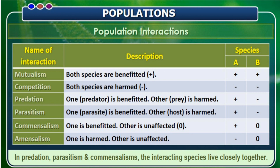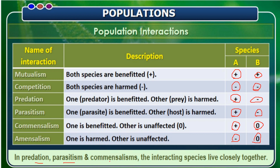Looking at the interactions in detail: in mutualism, both species A and species B are benefited. In competition, both species are adversely affected. In predation, the predator is benefited and the prey is adversely affected. In parasitism, one organism is benefited and the other is adversely affected. In commensalism, one is benefited and the other is neither benefited nor affected. In amensalism, one is harmed and the other is neither benefited nor harmed. In predation, parasitism, and commensalism, organisms interact or live close to each other.